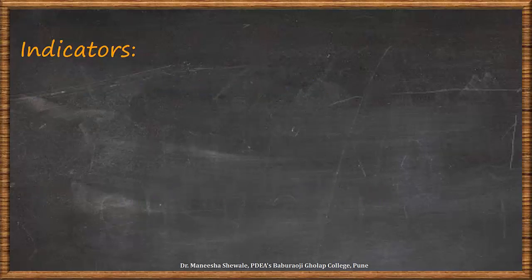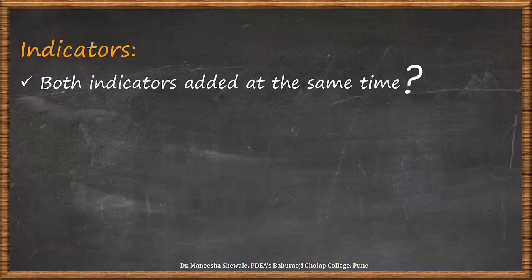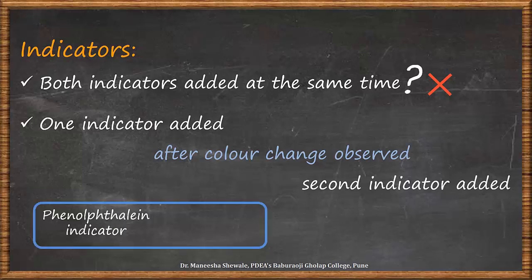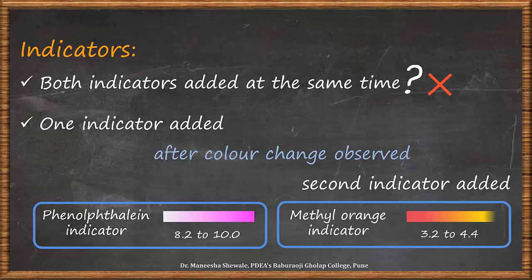In this volumetric method, we will be using two indicators. The question is, do we add both the indicators at the same time at the beginning of the titration? The answer is no. First, phenolphthalein is added, and then after we observe a colour change, we add the second indicator. Phenolphthalein shows a colour change in the pH range 8.2 to 10 — colourless at pH 8 and pink at pH 10. Methyl orange shows a colour change from orange-red to yellow, with a corresponding pH change from 3.2 to 4.4.